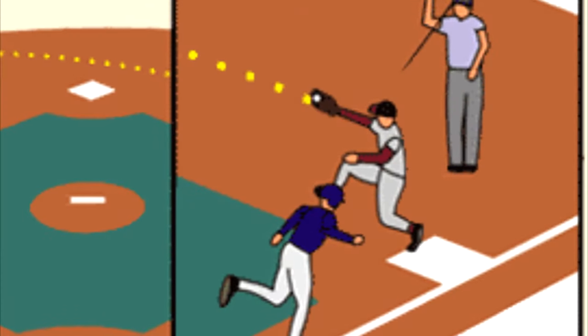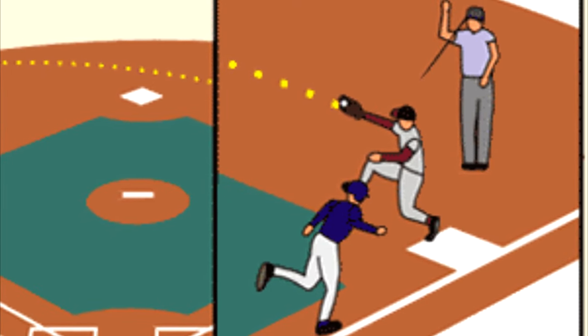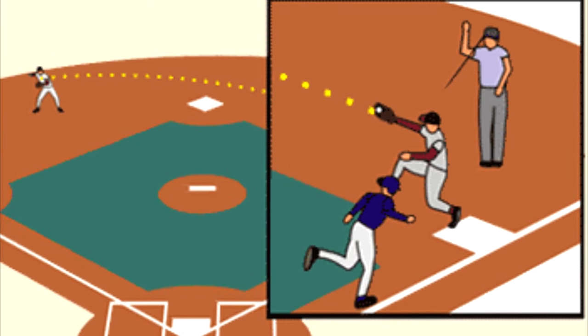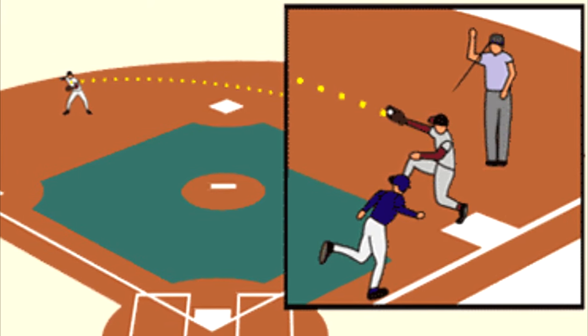When the batter starts running, he is often referred to as a runner. The defensive players will attempt to grab the ball and throw it to first base before the runner can make it there. If a defender has possession of the ball and touches first base before the runner touches first base, the runner will be out. If the runner touches first base before a defender with the ball does, the runner will be safe. This type of situation is often referred to as a force out — the offensive player is forced to run there, so the ball just has to beat the runner to the base to get the runner out.